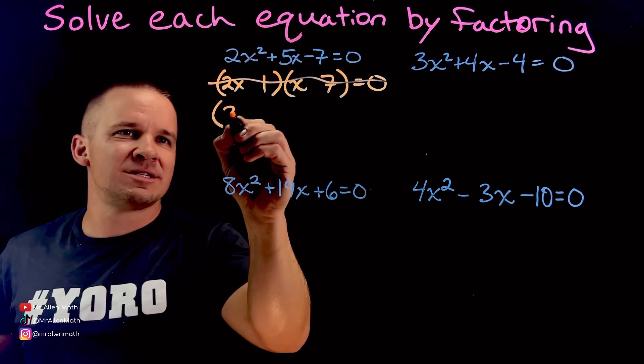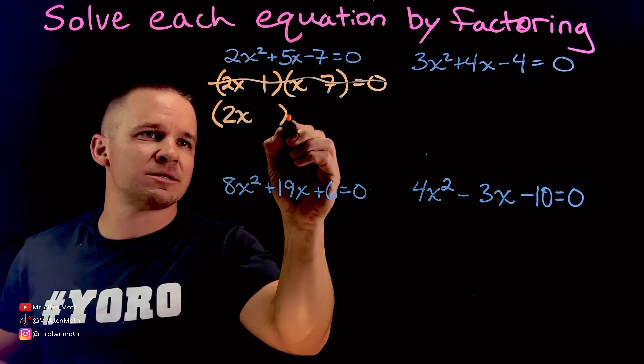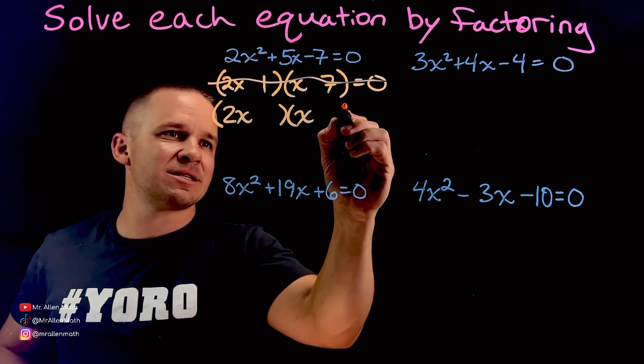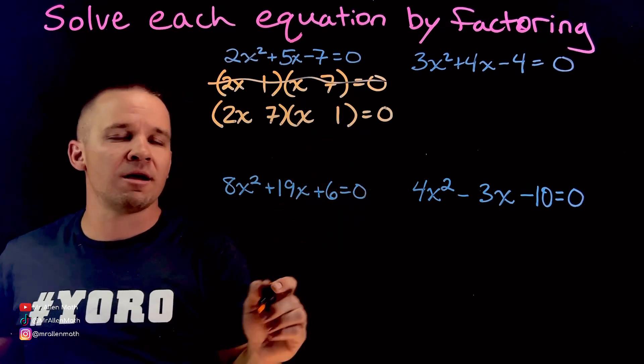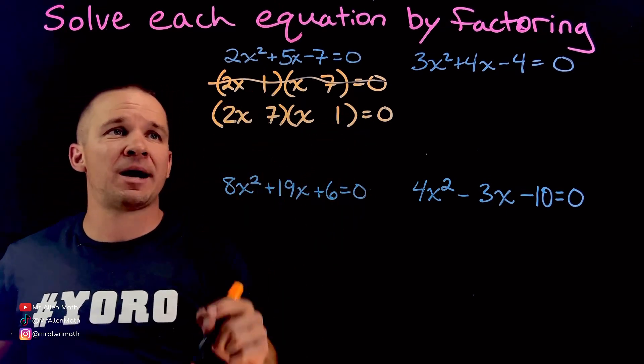Well, if I've got positive 7 and I multiply these together, I get 14x. In here, I'd get negative 1x. 14x, negative 1x, that's going to add to 13x. And even if I switch those signs, I'd get negative 13x, which isn't 5x. So, no bueno. But let's set up another set of factors here, again with the 2x and again with the x because I know that's got to be correct.